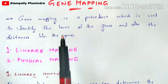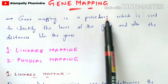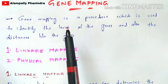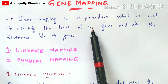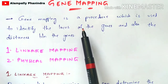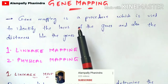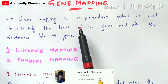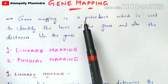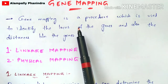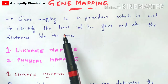In this video, let us discuss about gene mapping in detail. Gene mapping is a procedure which is used to identify the locus of the gene and also the distance between the genes. The locus of the gene is nothing but the position of the gene. We can exactly find the location of genes by using this gene mapping method, and we can also find the distance present between genes in the same chromosome.